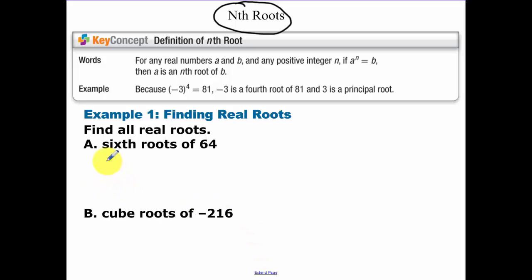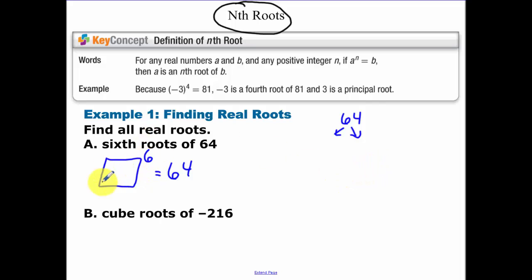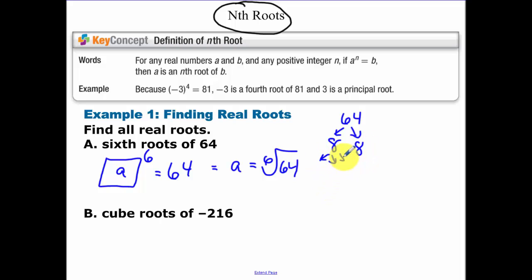So the 6th root of 64 — basically what you're asking is what to the 6th power gets me 64. Break it down so that you have 6 of the same things that multiply to be 64. 64 we know is 8 times 8. Now break 8 down: 8 is 2 times 2 times 2. Since I have 6 of those, the 6th root of 64 is positive and negative 2.